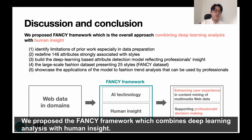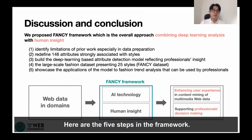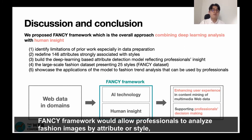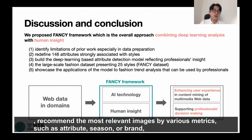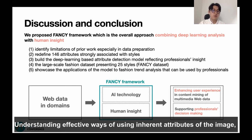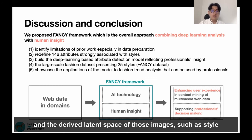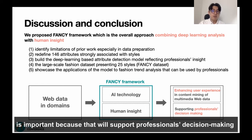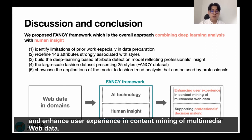We propose the FANCY framework, which combines deep learning analysis with human insight. There are five steps in the framework. The FANCY framework would allow professionals to analyze fashion images by attribute or style, recommend the most relevant images by various metrics such as attribute, season, or brand, and compare fashion images in different styles. It also helps understand the effective ways of using inherent attributes of images and the structure of those images, supporting professional decision-making and enhancing user experience in content mining of multimedia web data.